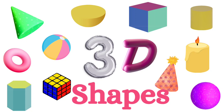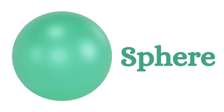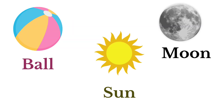3D shapes. This is the shape of a sphere. Let us see some examples of sphere which we see daily: ball, sun, moon. These are the few examples of sphere. These shapes look like sphere.